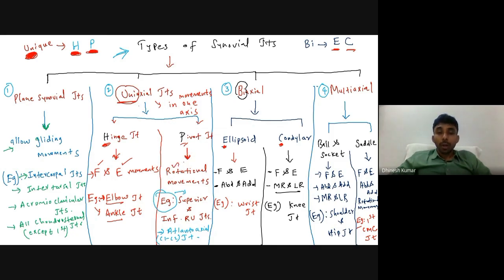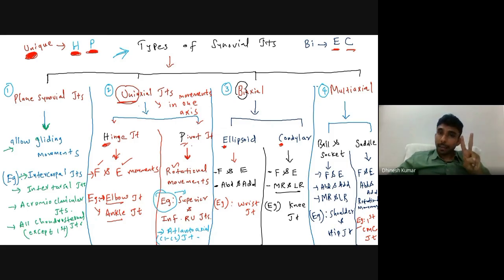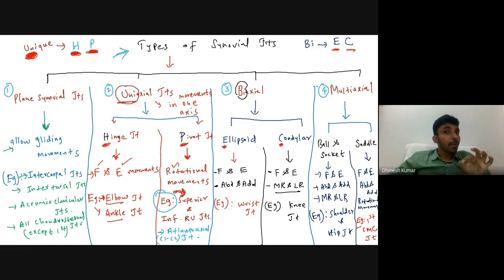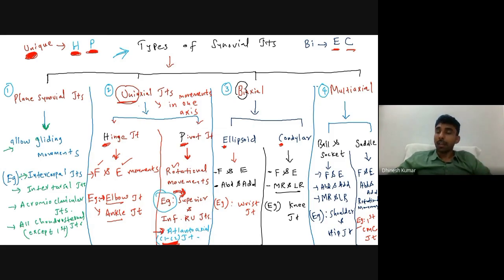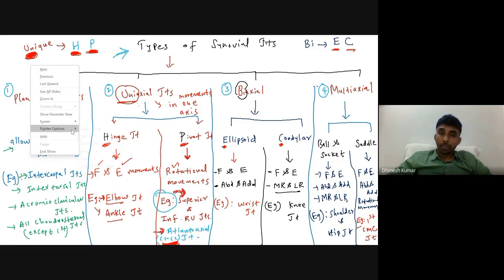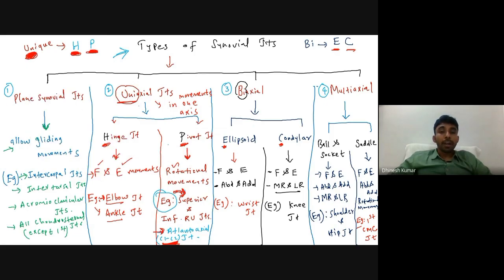In pivot joints, only rotational movements take place. The two classical examples for pivot joints are the superior and inferior radio-ulnar joints, and the atlanto-axial joint (between C1 and C2), where rotational movements of the head take place.